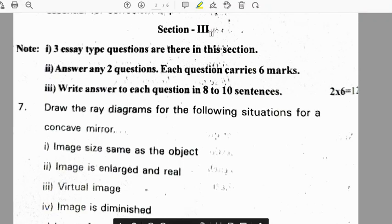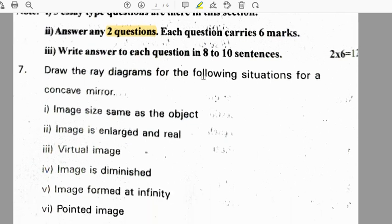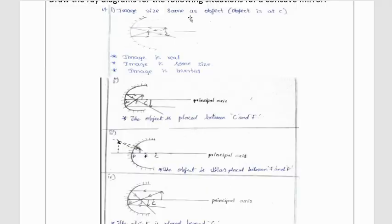In section 3, students we have internal choice. 3 questions will be asked, we need to attempt only 2 questions. Each question carries 6 marks, total weightage is 12. Draw the ray diagram for the following situation for a concave mirror: image size as object.